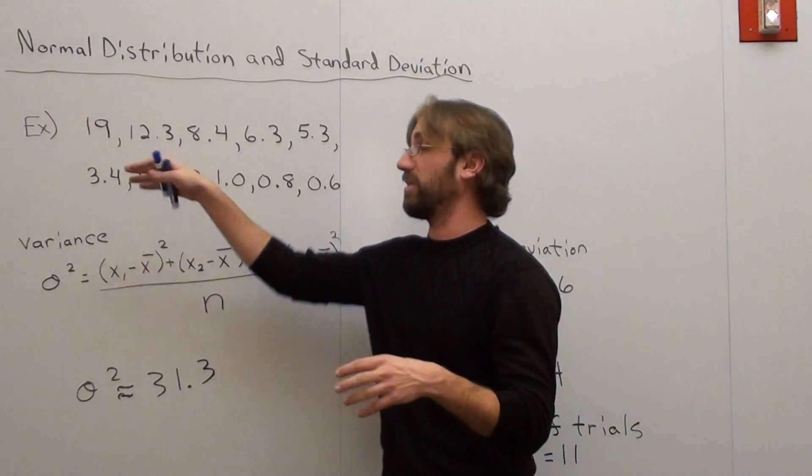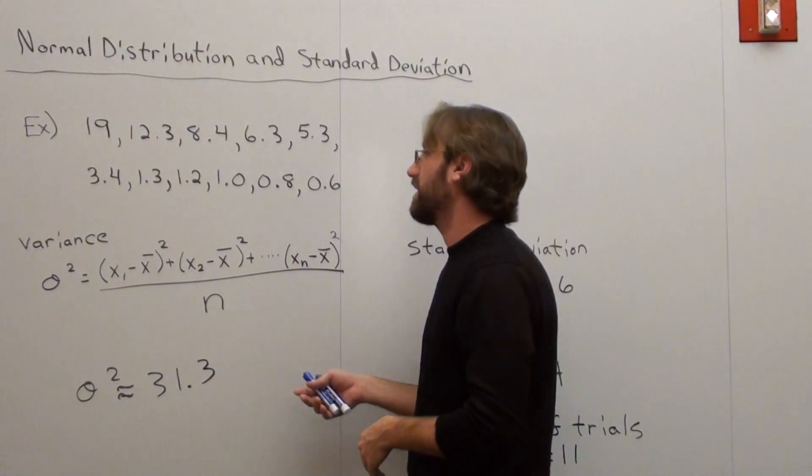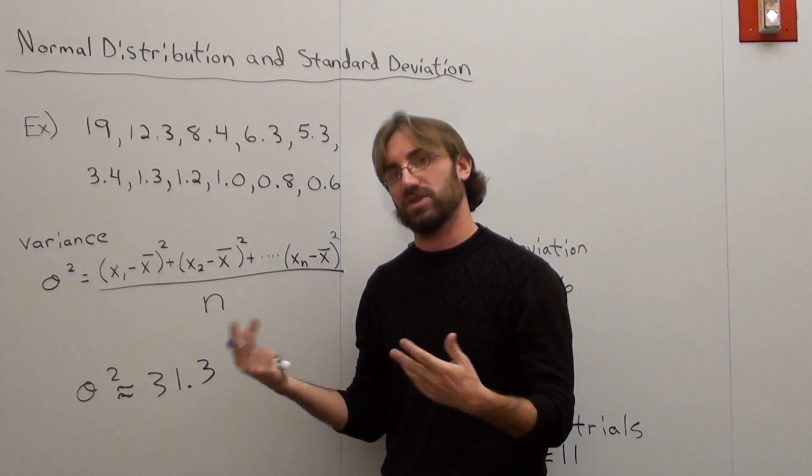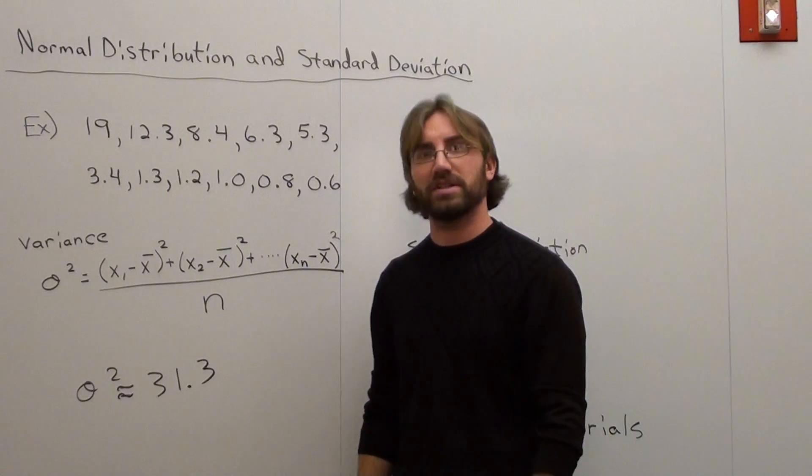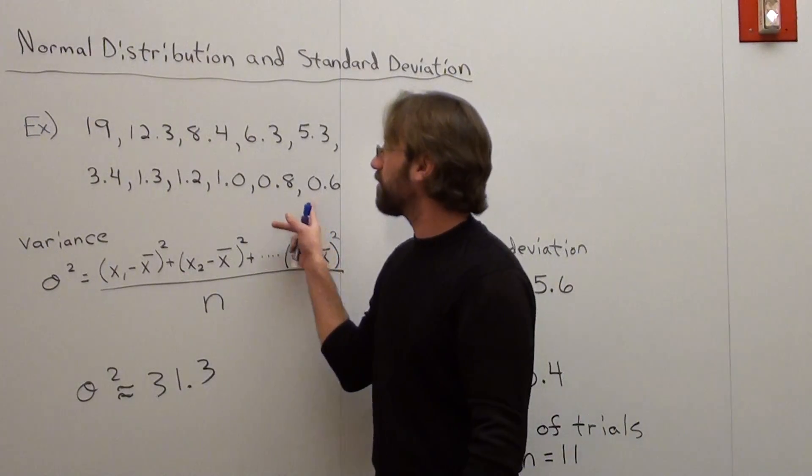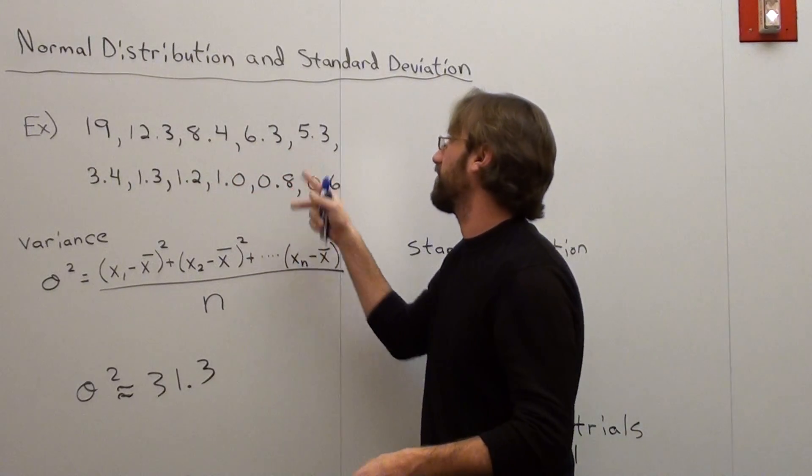So what I have is this data right here, and it's arbitrary. It can be anything, but in this case I believe it's the population in millions of certain states. Yeah, that makes sense. There's 11 of them right here: 19, 12.3, 8.4, 6.35, etc.